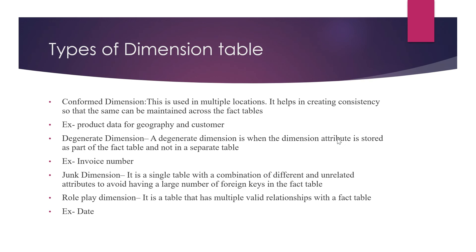Then we have the junk dimension. A junk dimension is a single table with a combination of different and unrelated attributes, created to avoid having a large number of foreign keys in the fact table. When we combine all such miscellaneous attributes into one dimension, we call it a junk dimension.